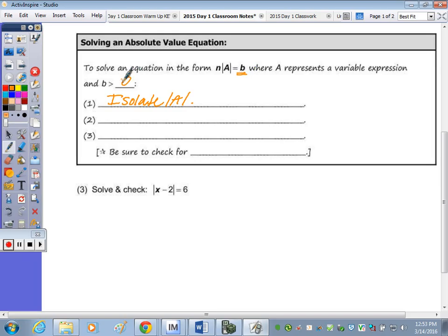So it has to be greater than zero. If it's not, there's no solution, you don't need to move any further. How many solutions for an absolute value expression, or equation? Two. So after this step, we need to set up two equations.